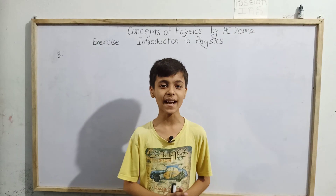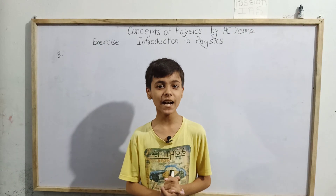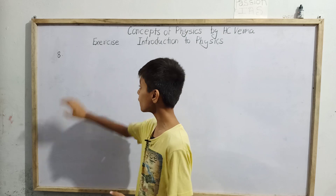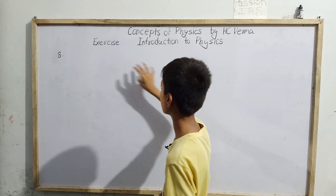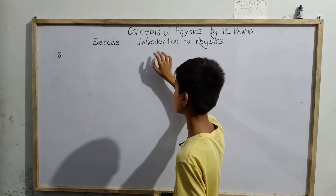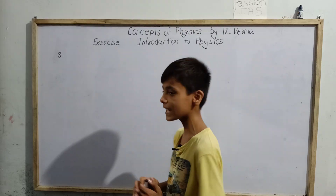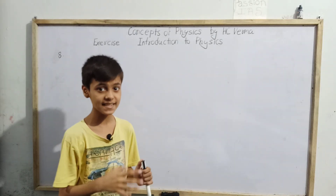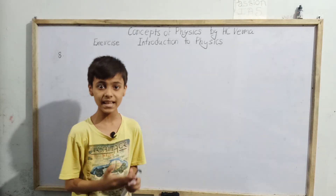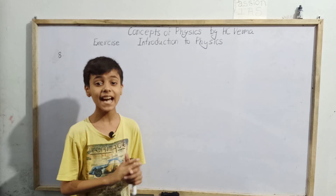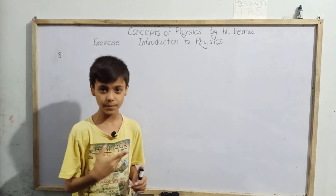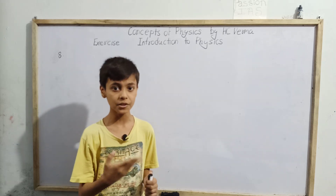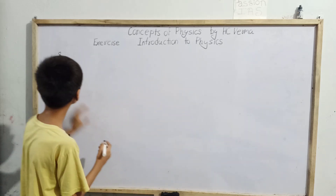Hello students, I am back. I am Salim Khan, studying in 5th standard, and today we have question number 8 from the exercise of Introduction to Physics from Concepts of Physics by H.C. Verma. The question is: suppose the acceleration due to gravity at a place is 10 meters per second square — find its value in centimeter per minute square.